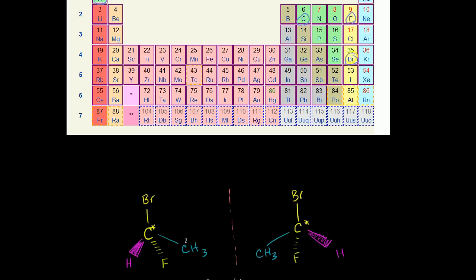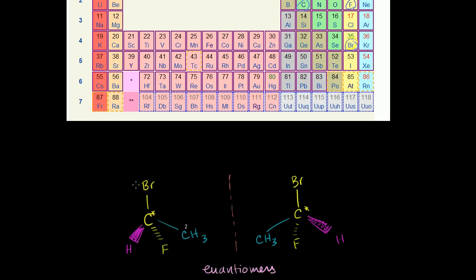So of all of these, bromine is the largest — we'll call this number 1. Then after that we have fluorine, that is number 2. Number 3 is the carbon. And then hydrogen is the smallest, so that is number 4.